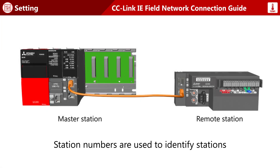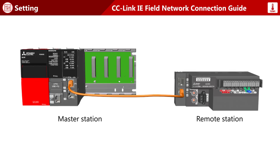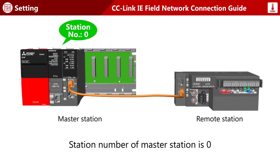Just as individual telephones are assigned telephone numbers for identification, station numbers are used to identify stations. The system shown here is configured with two stations. The station number of the master station is always fixed to zero.